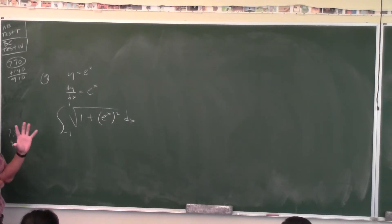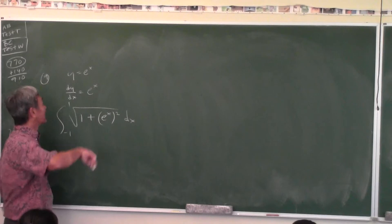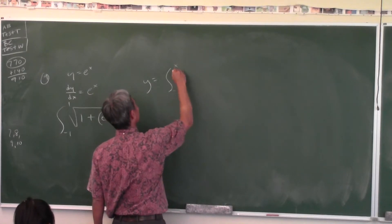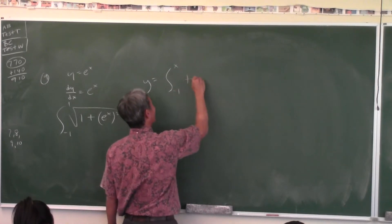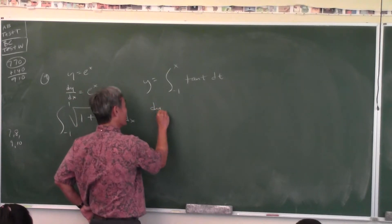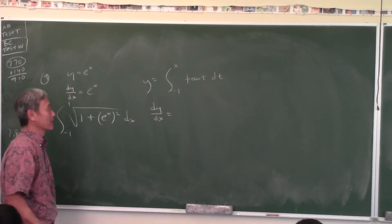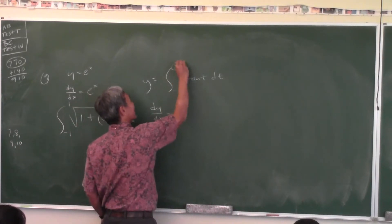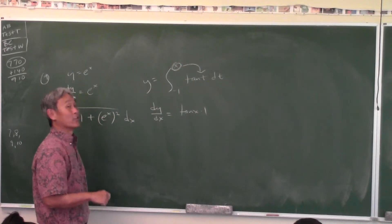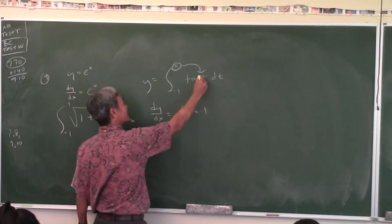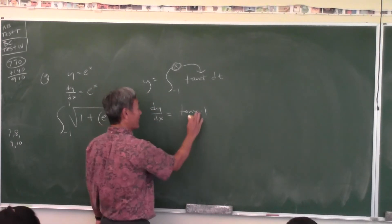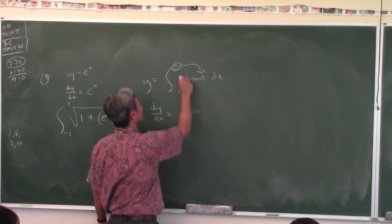Let's review something right now — there were three of them on the homework but some of you completely forgot. What if they give you the function as an integral? Fundamental theorem of calculus part one. You take this and plug it in there so you get tangent x, and then you've got to multiply it by the derivative of that, which is one.